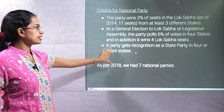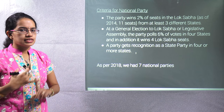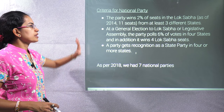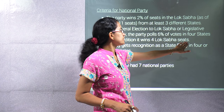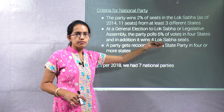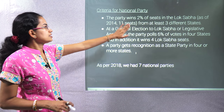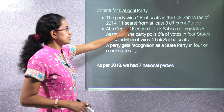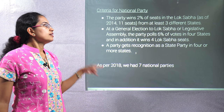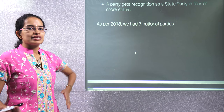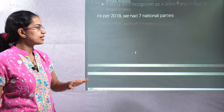The detailed criteria for a national party are: recognition as a state party in at least four states; securing six percent of votes in four states and winning at least four Lok Sabha seats; and winning two percent of Lok Sabha seats — as of 2011, that means at least 11 seats — from at least three different states. If all these criteria are fulfilled, the party is considered a national party.